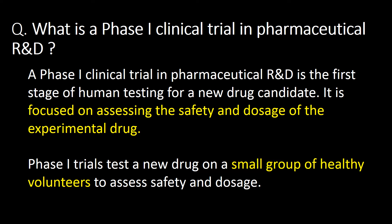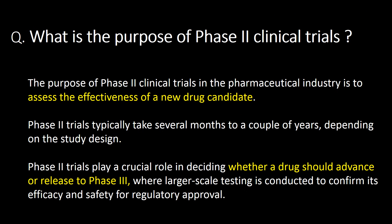What is a Phase 1 clinical trial in pharmaceutical R&D? A Phase 1 clinical trial is the first stage of human testing for a new drug candidate. It is focused on assessing the safety and dosage of the experimental drug. Phase 1 clinical trials test a new drug on a small group of healthy volunteers to assess safety and dosage.